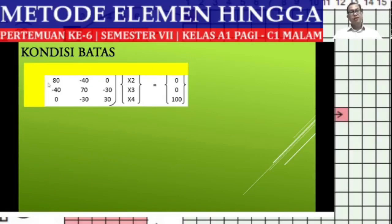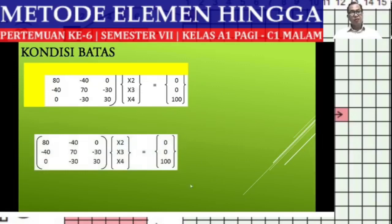So we obtain a new matrix — originally a 4×4 matrix, now reduced to a 3×3 matrix, with X1 already eliminated.